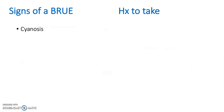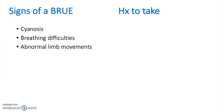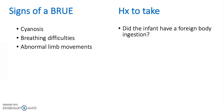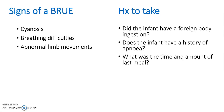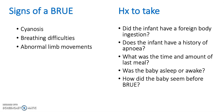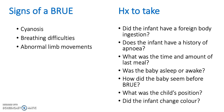Signs of a BRUE include cyanosis, breathing difficulties, and abnormal limb movements. History to take includes: Did the infant have a foreign body ingestion? Does the infant have a history of apnea? What was the time and amount of the last meal? Was the baby asleep or awake? How did the baby seem before the event? What was the child's sleeping position? Did the infant change colour?